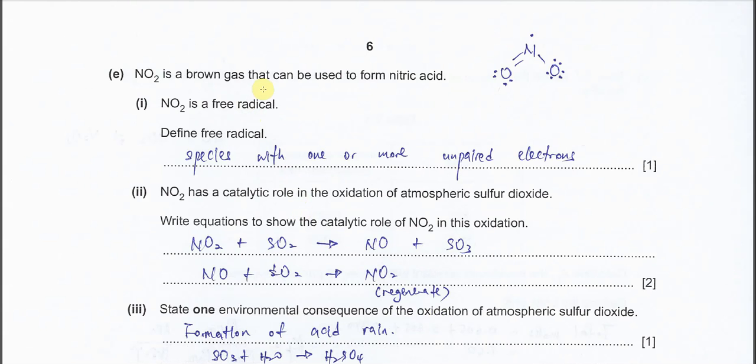Part E. NO2 is a brown gas. NO2 is a free radical. Define free radical. Whenever a species has unpaired electrons, we say it's a free radical. The same as you learned in organic chemistry, like chlorine undergoing homolytic fission to form chlorine radicals. Because the chlorine has one unpaired electron, same thing as NO2 - it has one unpaired electron on N. So we consider it a free radical. A species with one or more unpaired electrons.